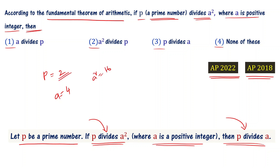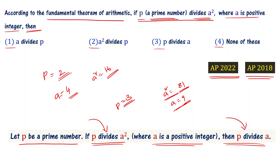For example, let P = 2 (a prime number). If a = 4, then a² = 16. 2 divides 16, and at the same time 2 also divides 4. Taking prime number 3 and a = 9: a² = 81. P = 3 divides 81, and 3 also divides 9. So, P is a prime number that divides a², and P also divides a. That is the correct statement.